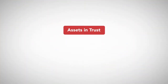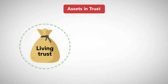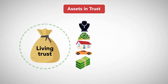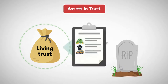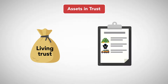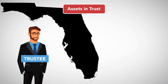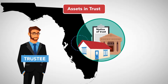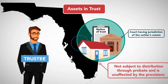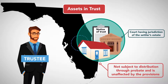Assets in trust. If a testator created a living trust, any of the testator's property which has been transferred to the trust prior to death is not included in the probate estate. Estates may require that the trust assets be disclosed to probate, typically to facilitate taxation or protect the rights of creditors. For example, in Florida, the trustee must file a notice of trust with the court of the county of the settler's domicile and the court having jurisdiction of the settler's estate. However, the property is not subject to distribution through probate and is unaffected by the provisions of the testator's will.